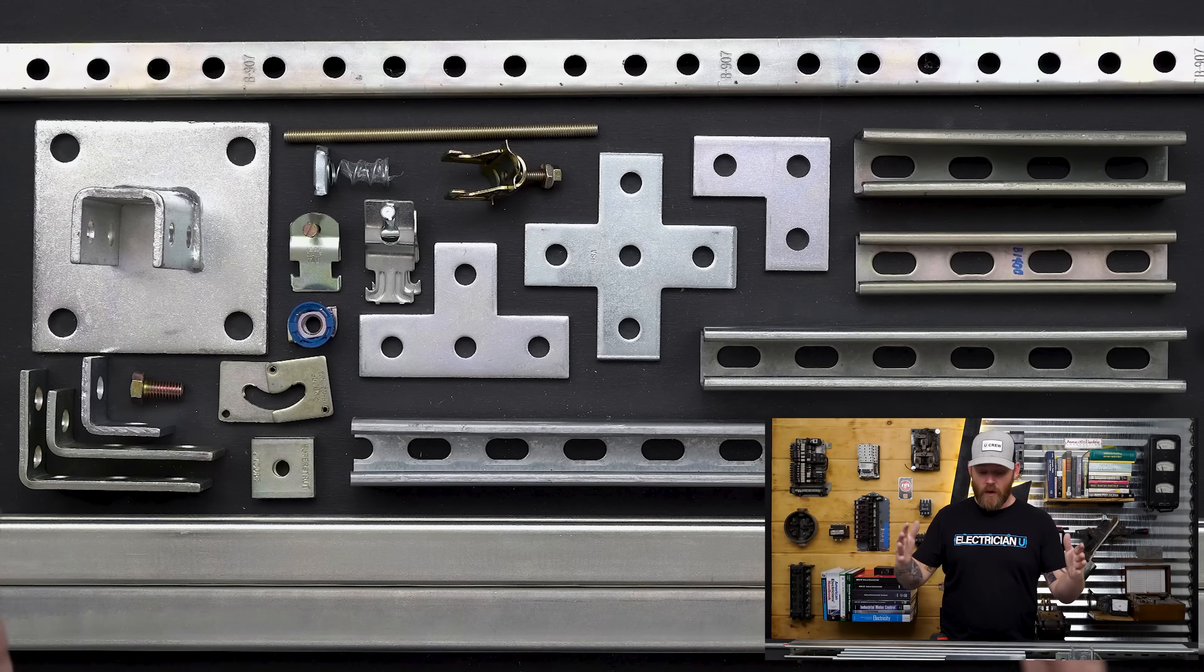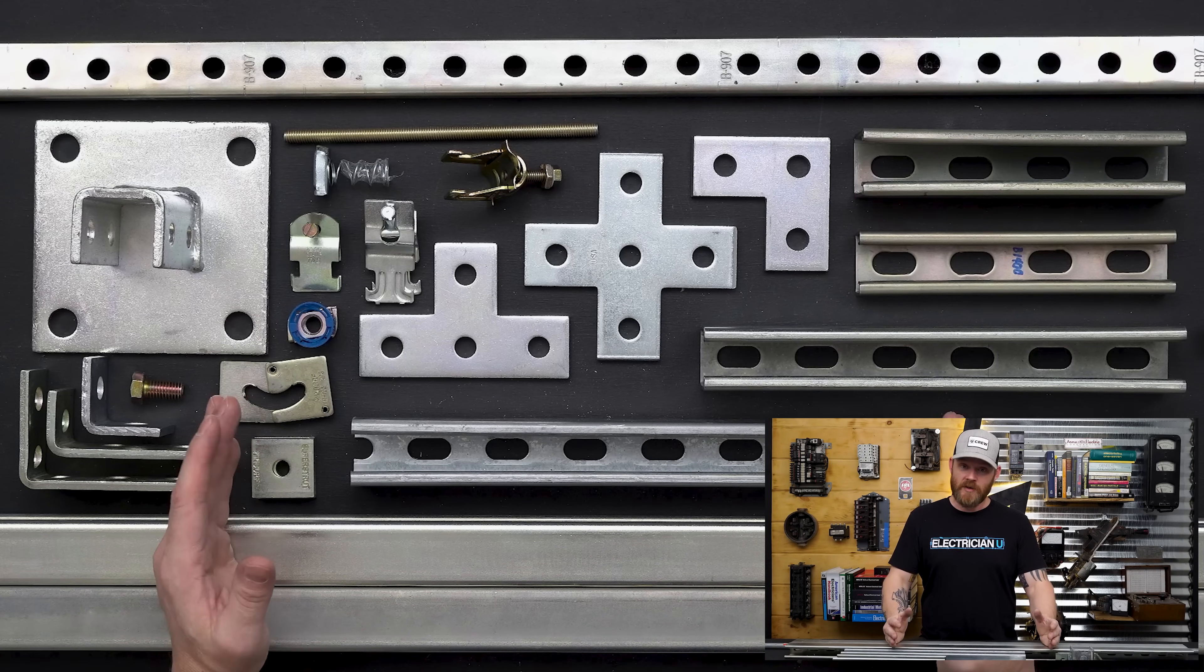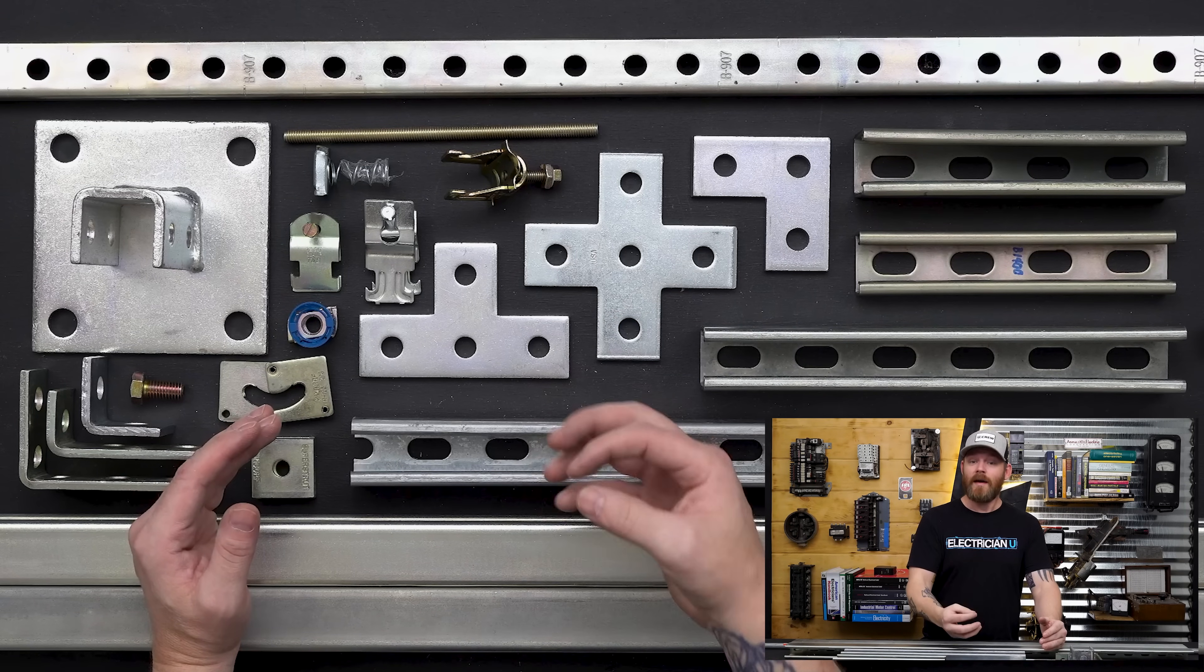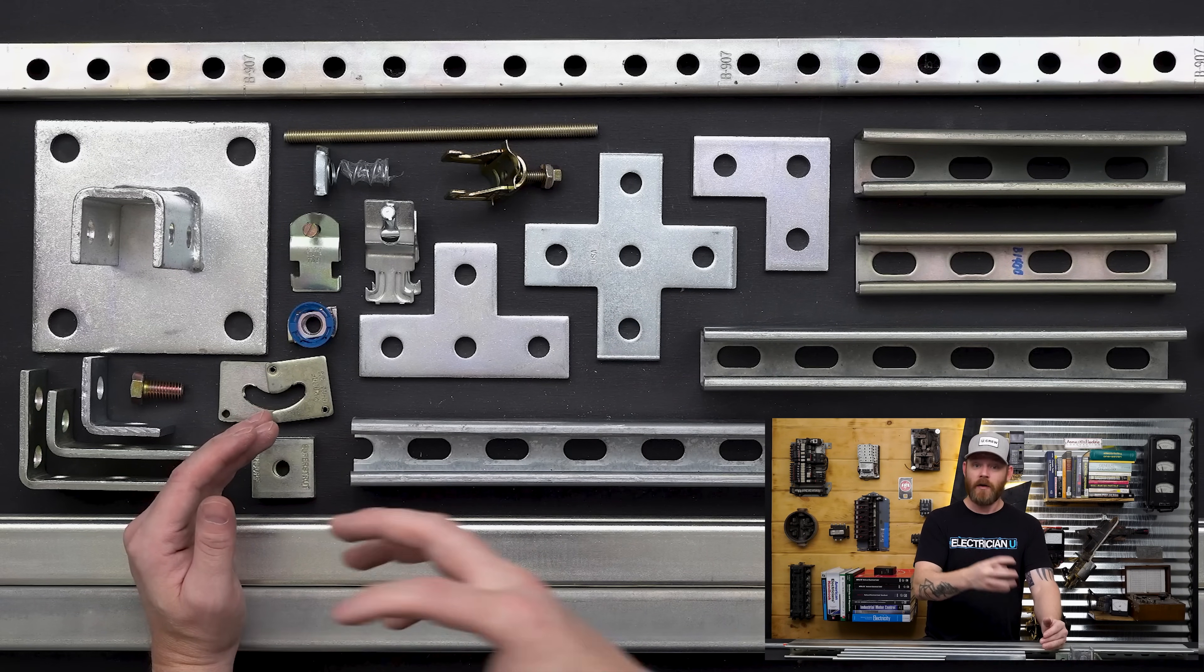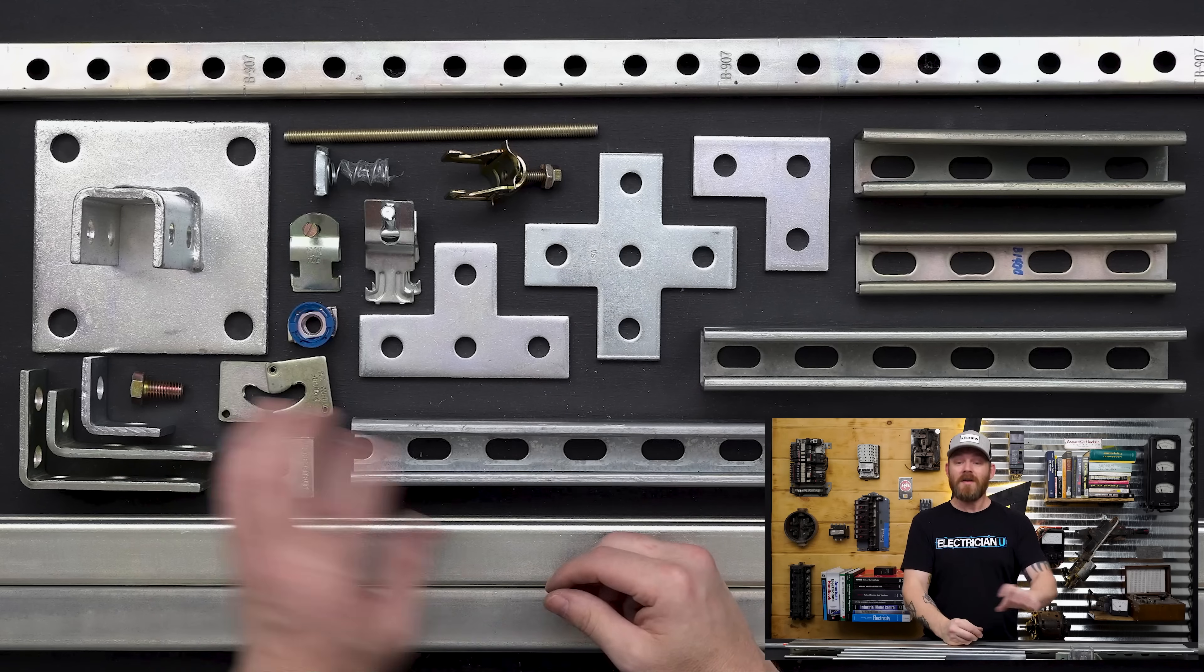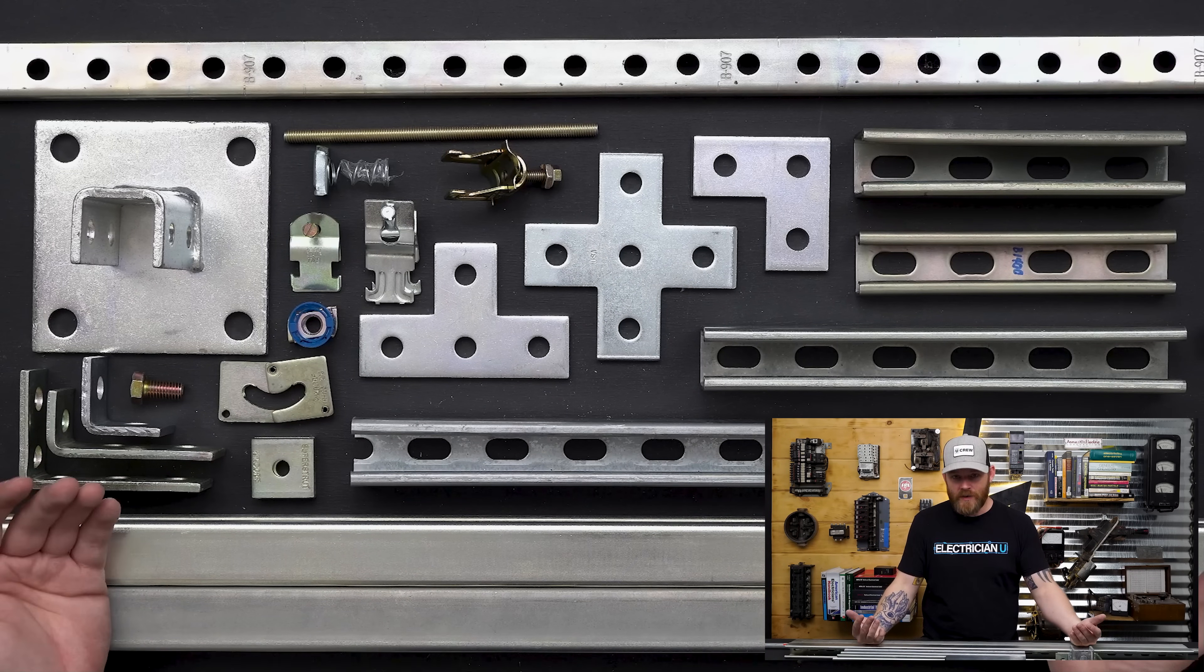So first and foremost, strut is not an electrical material. It is a framing system. Now it is listed to be able to be used as a support means for securing and supporting conduits and electrical products. So it is listed for that purpose, but we're not the only trade that uses this stuff.